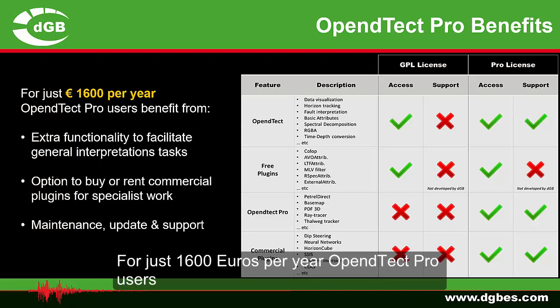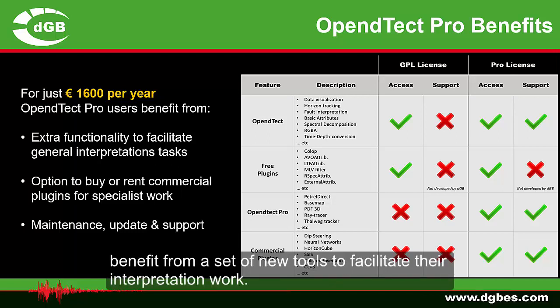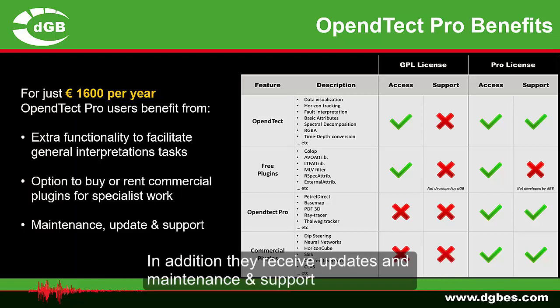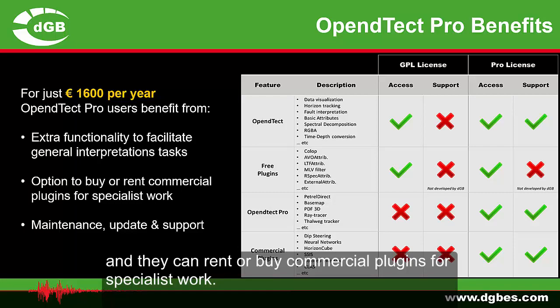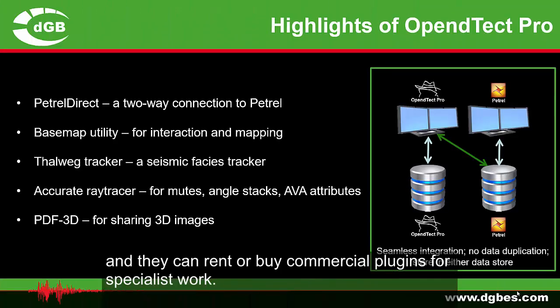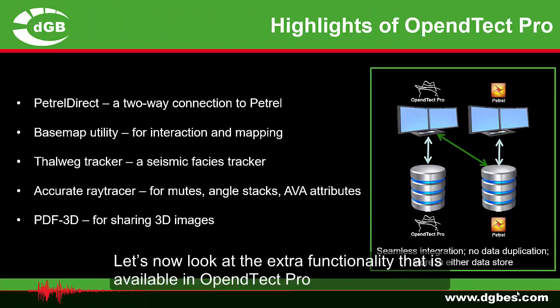For just €1,600 a year, OpenDetect Pro users benefit from a set of new tools to facilitate their interpretation work. In addition, they receive updates, maintenance, and support from DGB's highly responsive support team, and they can rent or buy commercial plugins for specialist work. Let's now look at the extra functionality available in OpenDetect Pro for commercial users.